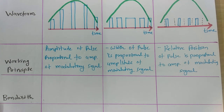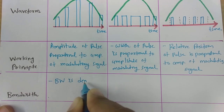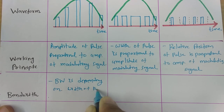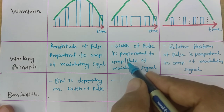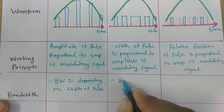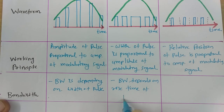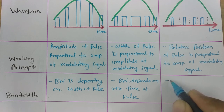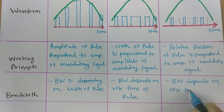Now let us move on to the next performance parameter: bandwidth. When we talk about Pulse Amplitude Modulation, bandwidth depends on the width of the pulse. In Pulse Width Modulation, bandwidth depends on the rise time of the pulse. And in case of Pulse Position Modulation, bandwidth also depends on the rise time of the pulse.